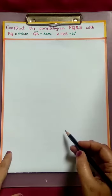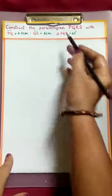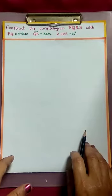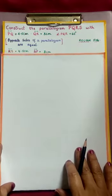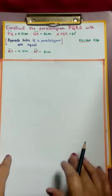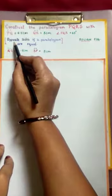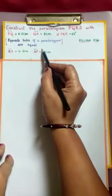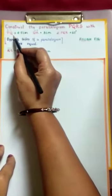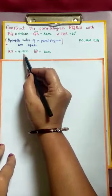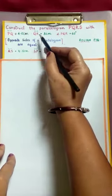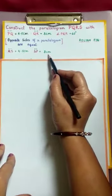As we know that to construct a quadrilateral, we need 5 independent measurements, but we have only 3 here. What about the other 2 measurements? Let's recall the properties of parallelogram. Since opposite sides of a parallelogram are equal, the side opposite to PQ is RS, which is equal to 4.5 cm, and the side opposite to QR is SP, which is 3 cm.